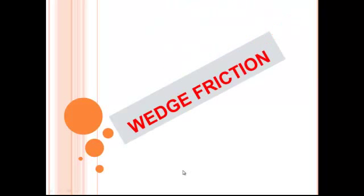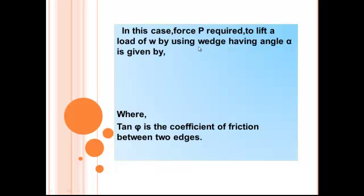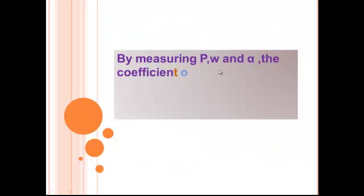Wedge friction. In this case, force P required to lift a load of W by using wedge having angle alpha is given by P divided by W equal to tan of alpha plus phi, where tan phi is the coefficient of friction between two surfaces. By measuring P, W and alpha, the coefficient of friction can be found out.